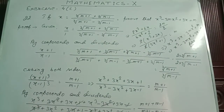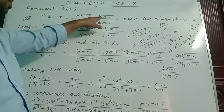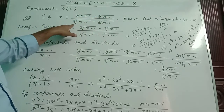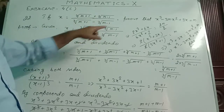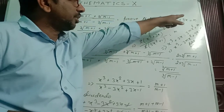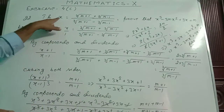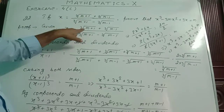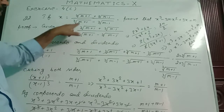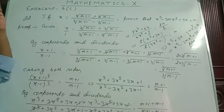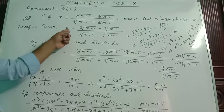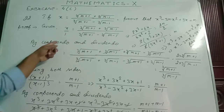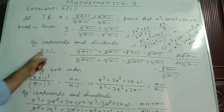In question number 22, if x equals cube root of m plus 1 plus cube root of m minus 1 by cube root of m plus 1 minus cube root of m minus 1, then prove that x cube minus 3mx square plus 3x equals m. Here, given that x by 1 — denominator is not given, so we consider there 1. So x by 1 equals cube root of m plus 1 plus cube root of m minus 1 by cube root of m plus 1 minus cube root of m minus 1. By componendo dividendo, I have used this property: x plus 1 by x minus 1.